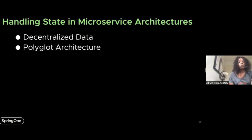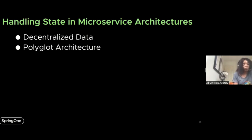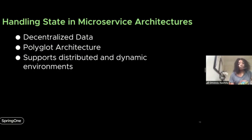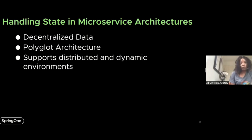Second, microservices support a polyglot architecture. With a monolith the centralized data store model limits you to a single type of data store per application, but with microservices you're able to design various components to use the database that is the best fit for the job. And of course microservices are also naturally designed to support the flux and failure-prone nature of distributed systems.